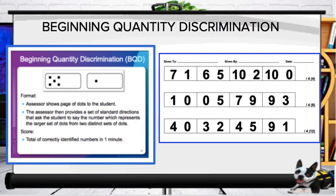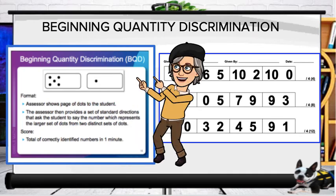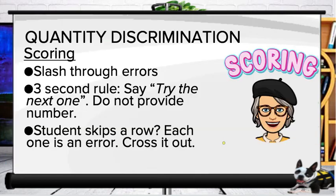For quantity discrimination, you may see the numbers in a box as in the example, or you may see something where there are actual dots for the student to count. When scoring, slash through errors, follow the three-second rule, and say 'try the next one.' For quantity discrimination, we do not provide the number. If the student skips a row, each item in that row counts as an error.